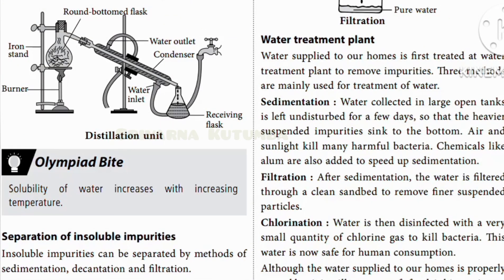In a water treatment plant, the process is more reliable. First, sedimentation: water is collected in a big container and sunlight kills harmful bacteria. Chemicals like alum are also added to speed up sedimentation. After sedimentation, the water is filtered through a clean sand bed to remove final substances. Then chlorination: small quantities of chlorine gas are added to kill bacteria.